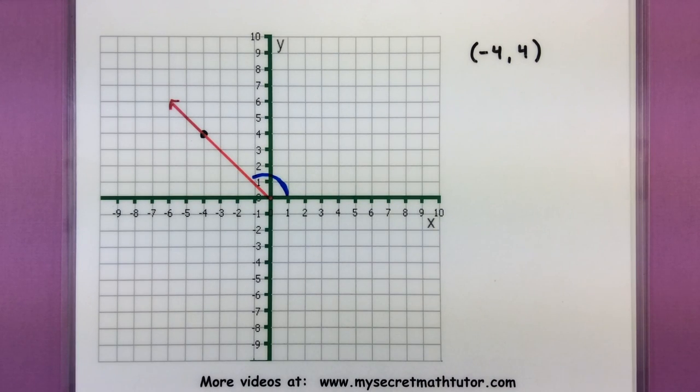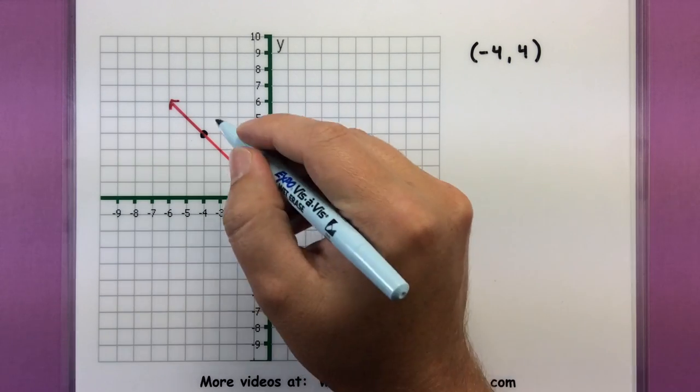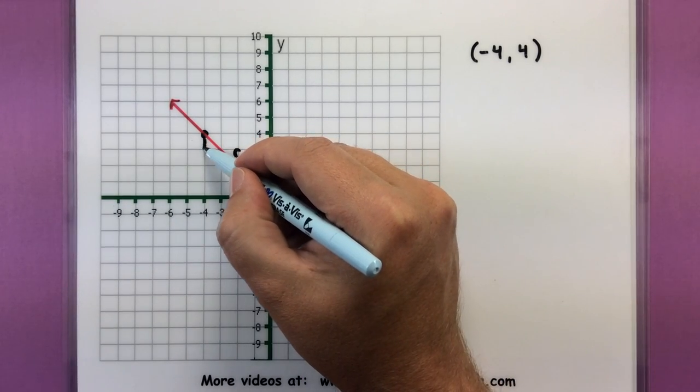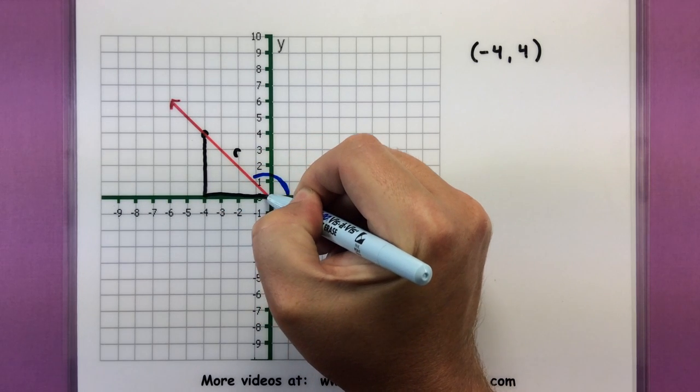And let's go ahead and figure out that r value like we did last time. And again that's just the distance from the origin to that point. We want to imagine another right triangle hiding in the background.